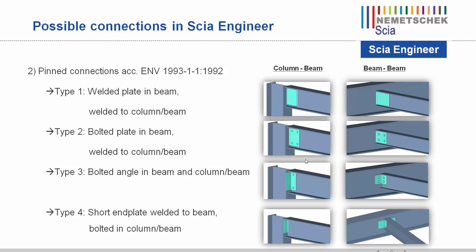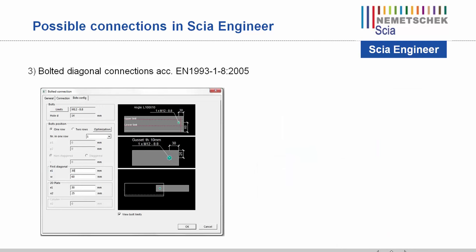The third and final possible connection type is the bolted diagonal connection, which is necessary to connect wind bracings, for example. This can also be checked and calculated in SIA Engineer.